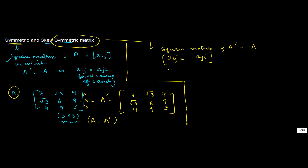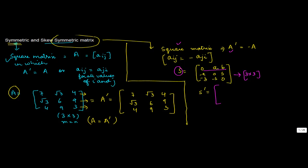Let's take an example. Define a matrix S as: first row 0, a, b; second row minus a, 0, s; third row minus b, minus s, 0. This is a square matrix of order 3 by 3, so the first condition is satisfied. Now find the transpose of S by converting each row into a column, giving the entries 0, a, b in the first column; minus a, 0, s in the second; minus b, minus s, 0 in the third.